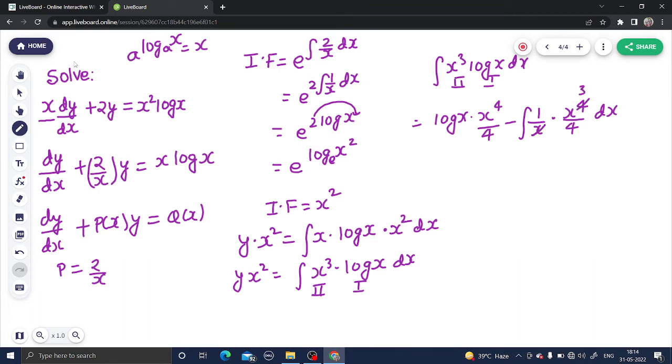So log(x)·x⁴/4, and integration of x³ is x⁴/4 - one 4 is already there, so that will become minus x⁴/16. So you are getting y·x² = x⁴/4·log(x) minus x⁴/16 plus a constant C.